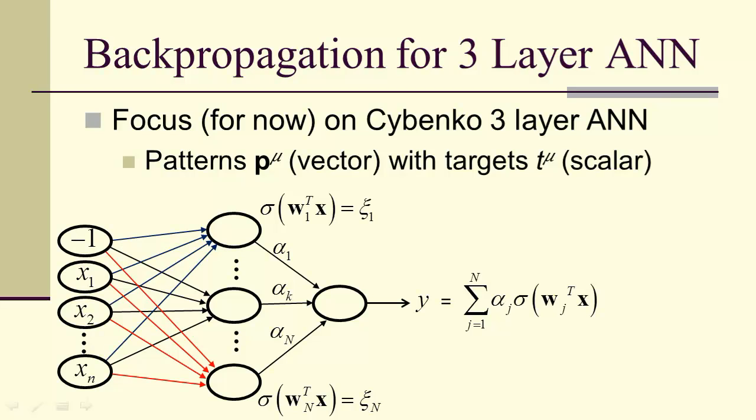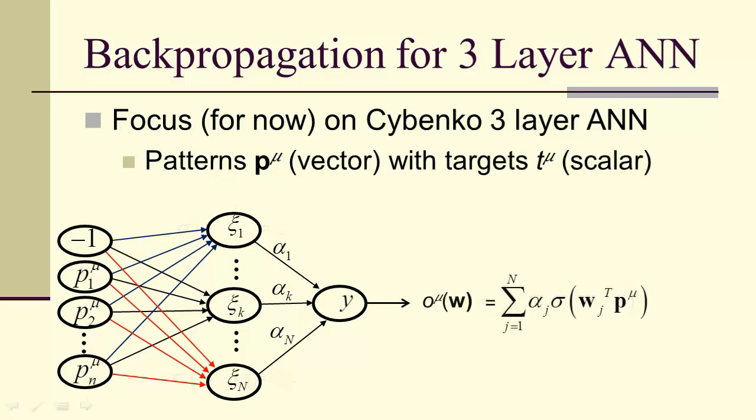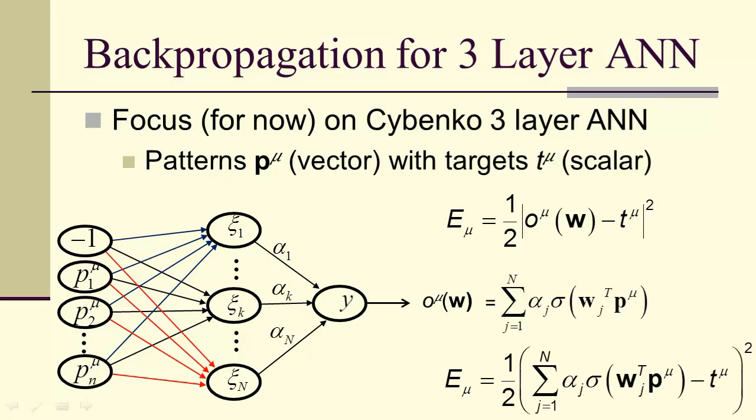And patterns correspond to targets T sub mu, which are scalar. And so we have this sort of a setup. If the patterns are introduced, then we have the output O sub mu of W from the patterns. And that's given by our synaptic sum. Our error for each pattern is as you would expect, only it's an absolute value instead of a norm. And when we substitute in the value of O sub mu of W, we end up with this expression.